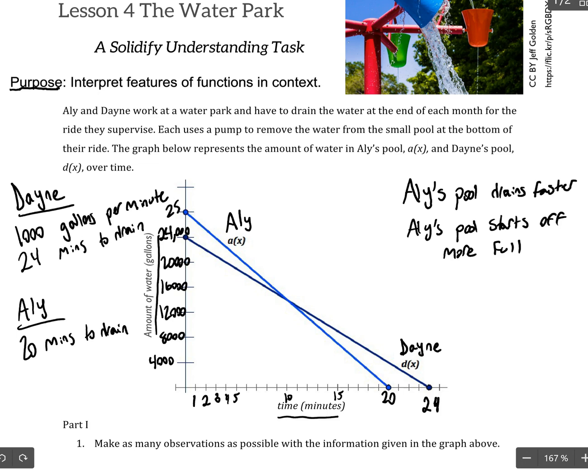And that means that Allie's pool started off with 28,000 gallons. So, if we had 28,000 gallons in Allie's pool, and it took 20 minutes to drain, if we simplify that, then that tells us that her pool is draining at 1,400 gallons a minute.